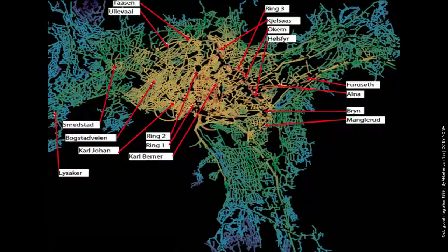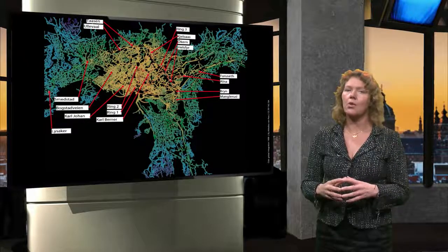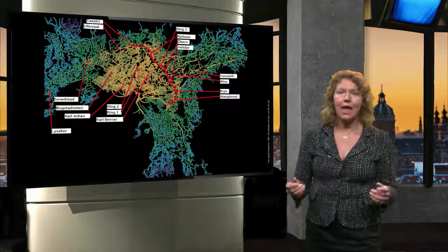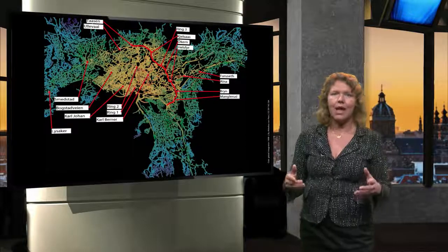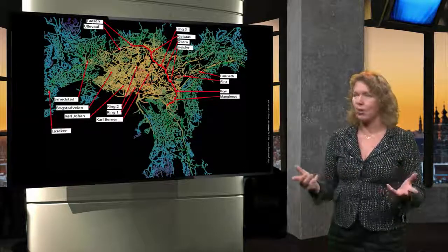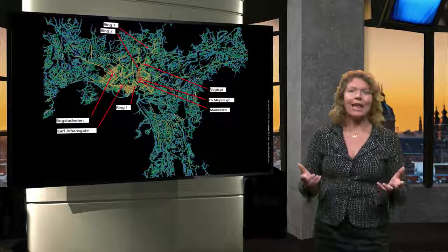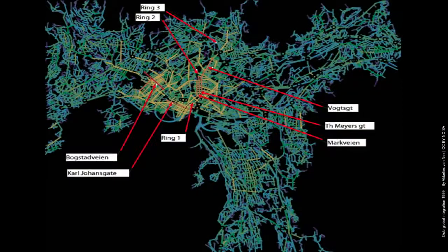You can also use this method to indicate where are the potential centers of the city. This is the case of Oslo from 1999. When you run a global integration analysis, which means taking the whole city into account, then you see the outer ring road becomes the most integrated space. There you have all the car-based shopping malls.